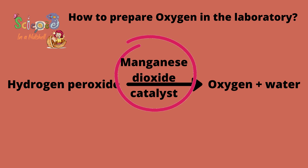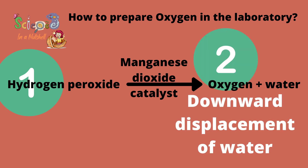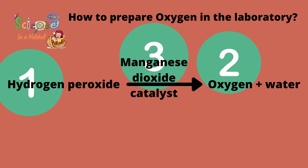Let's revise the preparation of oxygen. All you need to know are three points. First, hydrogen peroxide dissociates into water and oxygen. Second, oxygen is collected by the downward displacement of water. Third, manganese dioxide works as a catalyst.